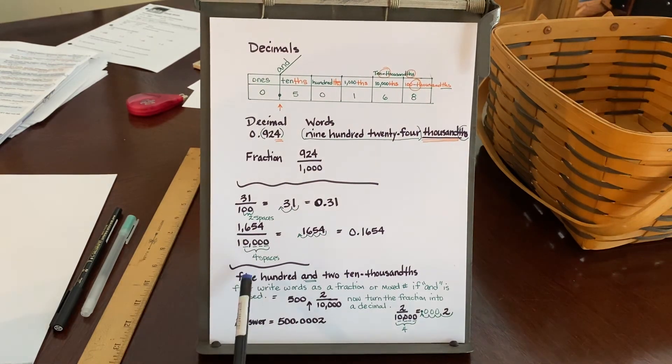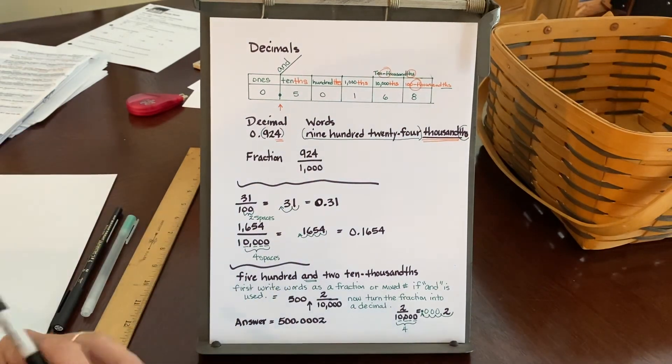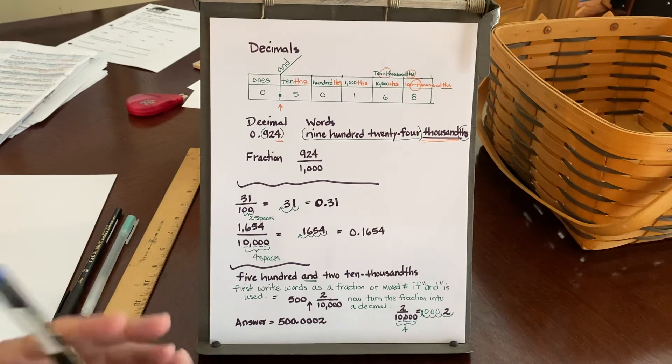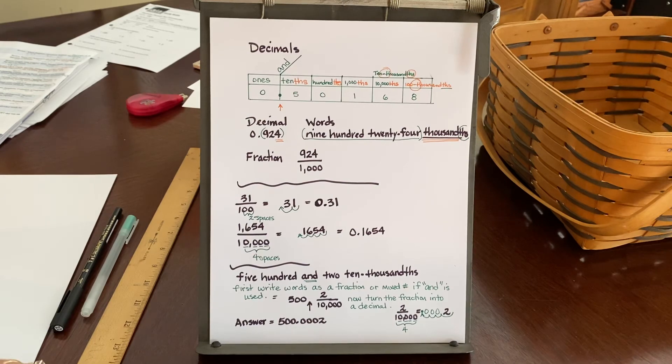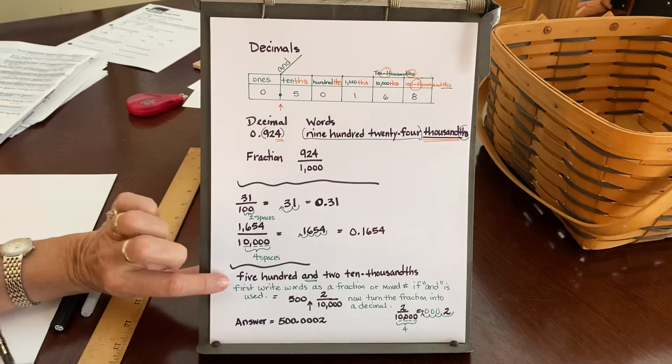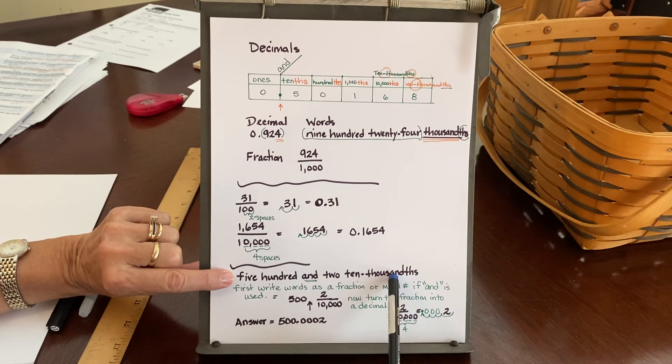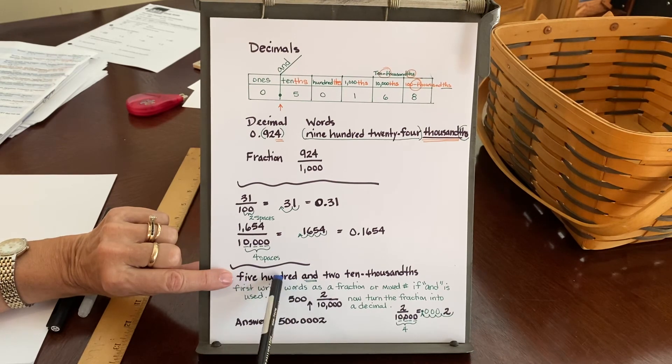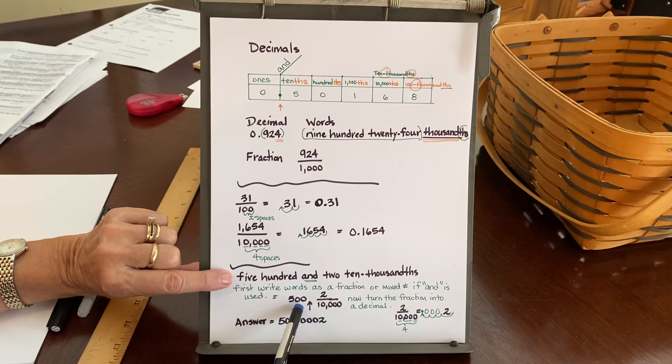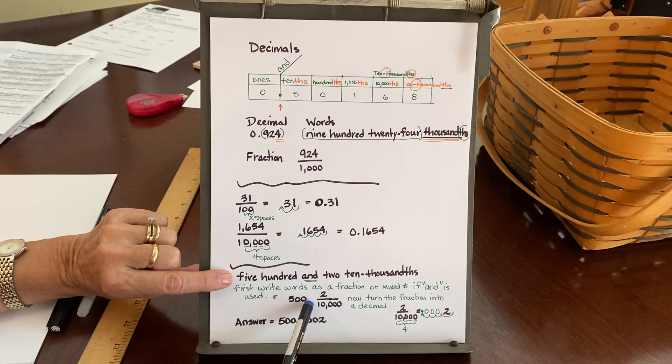So then we go down and we've got a word that we need to turn into a fraction and then a decimal. A lot of times I'll just say, turn these words into the decimal equivalent. Well, it'll be much easier for you to turn it into a fractional equivalent first and then take the next step to turn it into a decimal. So I'll show you what I mean. We have 500 and two ten thousandths. Well, the word and is the decimal. So the beginning part, 500, that's the whole number 500. So go ahead and just write that as a whole number. Then because we have the and, there is an understood decimal behind this 500.